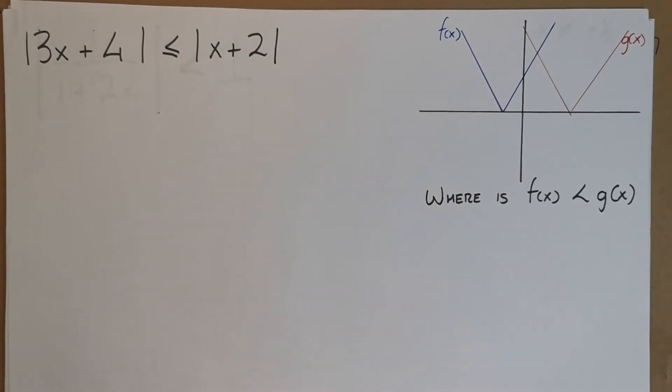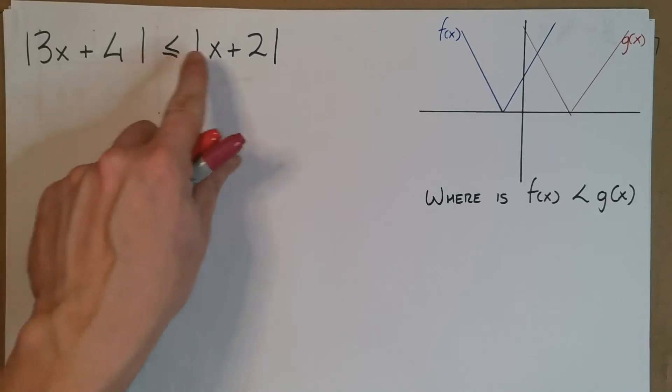So say I get something like this, which is what you're going to start seeing more often: two modular equations, but where is this one less than this one?